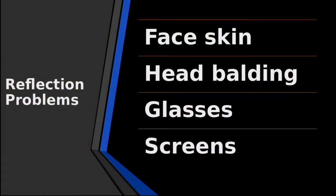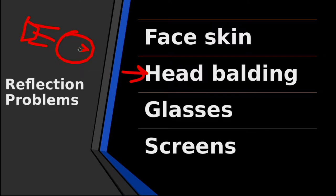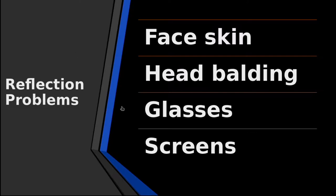Every lighting situation is whatever you want it to be — you make the lights you want, but some problems keep occurring. One of them is people's face and skin. People have different tones and colors to their skin and it can reflect light differently. You also need to consider things like someone going bald — a very bright light shining on someone with no hair creates a very bright spot that can look way too bright.